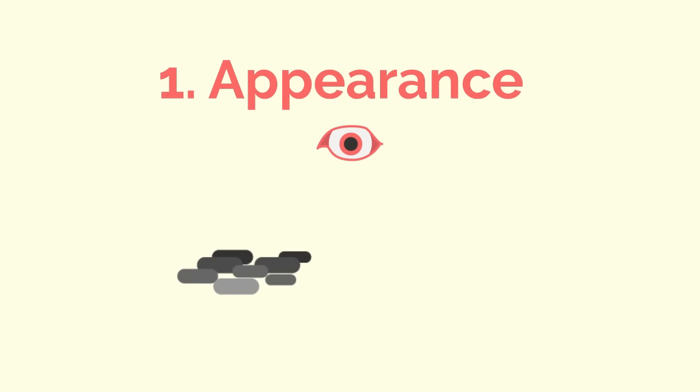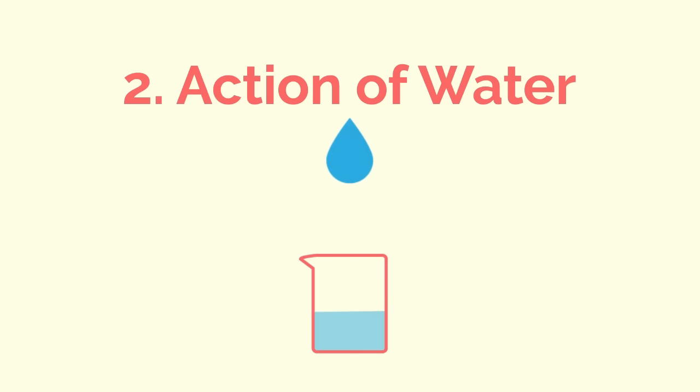Iron filings are dark grey crystals, whereas sulphur is a bright yellow powder. You will see that the iron sinks and the sulphur floats.